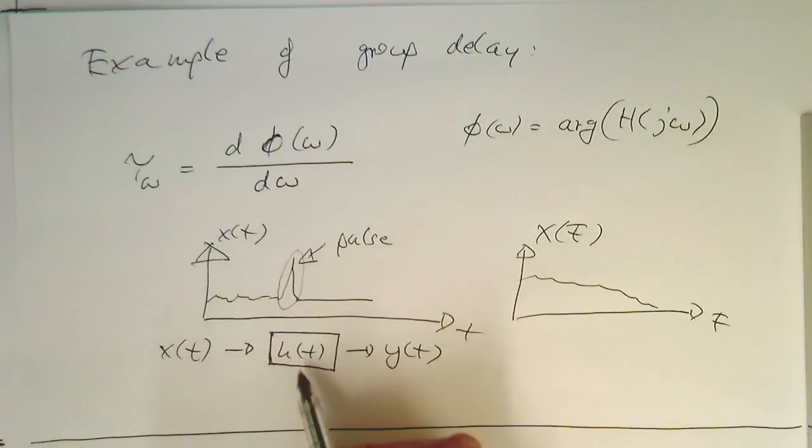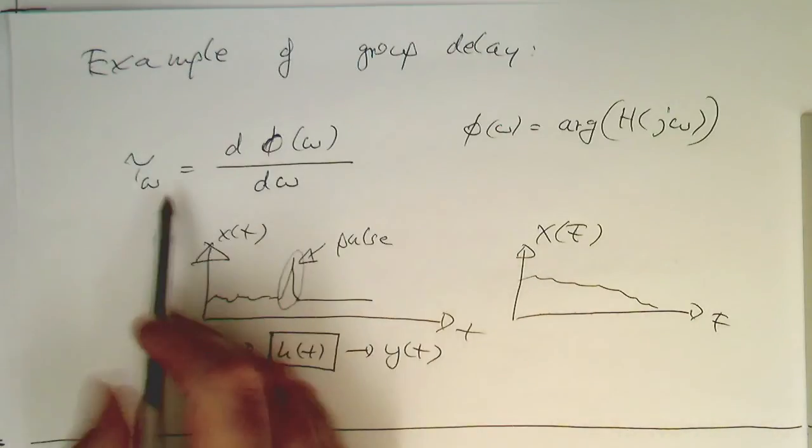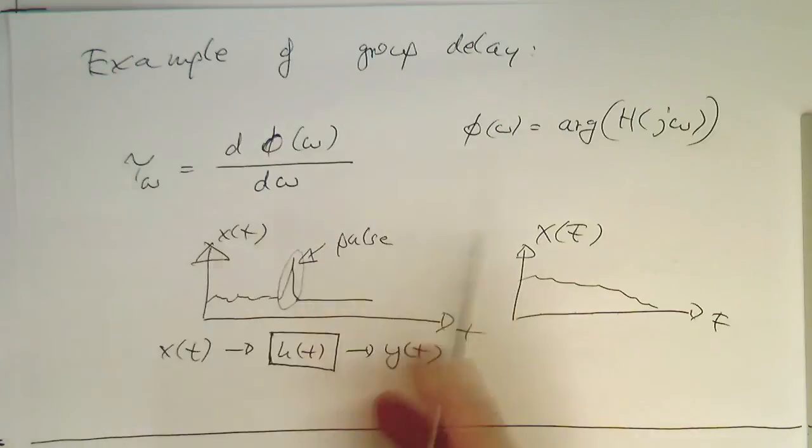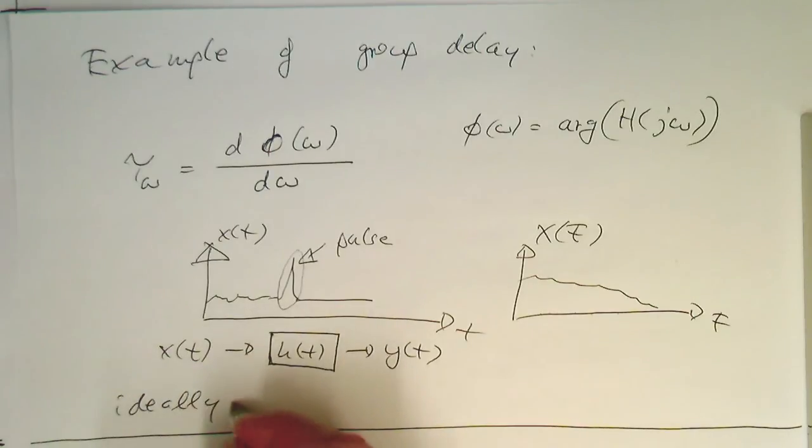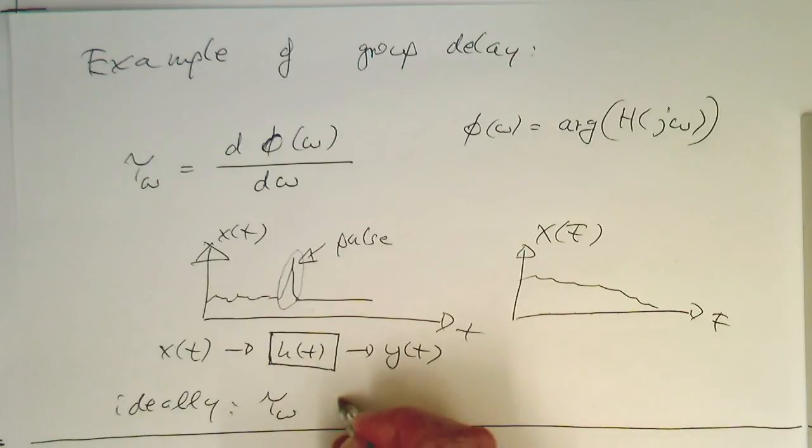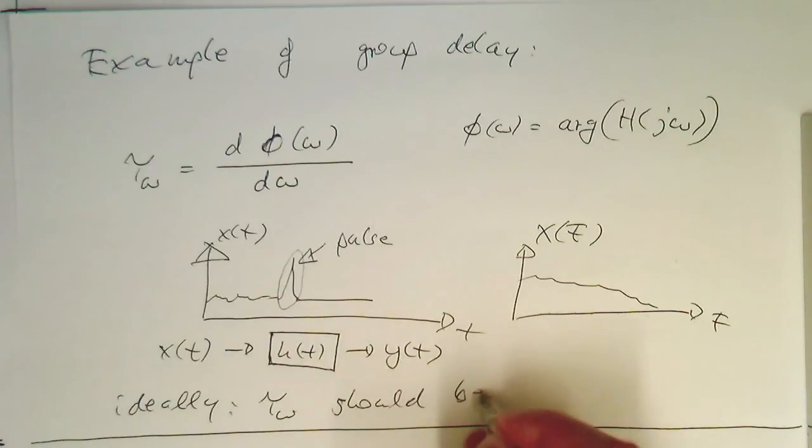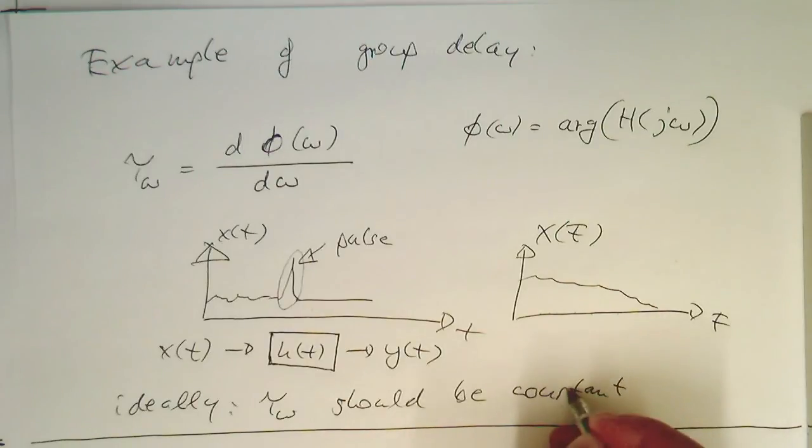This is only guaranteed if all these frequencies have the same delay. So in an ideal scenario, tau of omega should be constant.